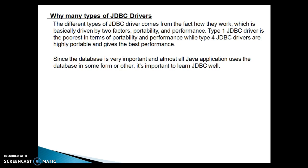The different types of JDBC drivers exist because of how they work, which is basically driven by two factors: portability and performance. The Type 1 JDBC driver is the poorest in terms of portability and performance, while Type 4 JDBC drivers are highly portable and give the best performance. Since the database is very important and almost all Java applications use a database in some form, it is important for all Java developers to learn the JDBC API. Frameworks like Hibernate and JPA are built on top of the JDBC API itself, which is why it is important to understand how JDBC API works.